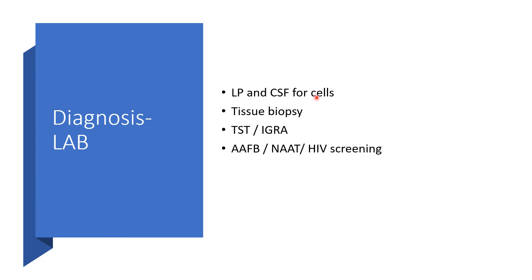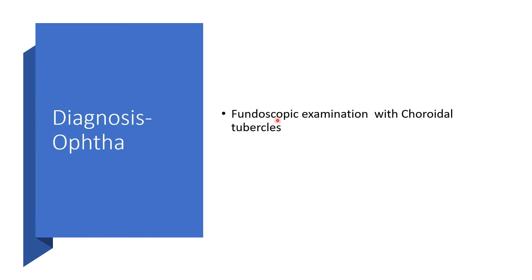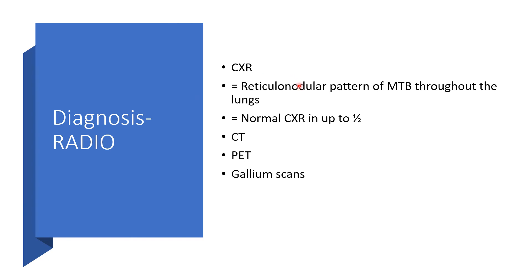We can perform lumbar puncture and have CSF for cells. Tissue biopsy. Tuberculin skin test or interferon-gamma release assay. Acid-fast bacilli smear. Nucleic acid amplification test. And HIV screening — all these could be done. Fundoscopy examination may reveal choroidal tubercles. Radiologically, chest X-ray could be done, showing a miliary nodular pattern throughout the lungs. However, in half of everyone who will have this condition, the chest X-ray will be normal. Then we may call for CT, PET, or guidance scans.